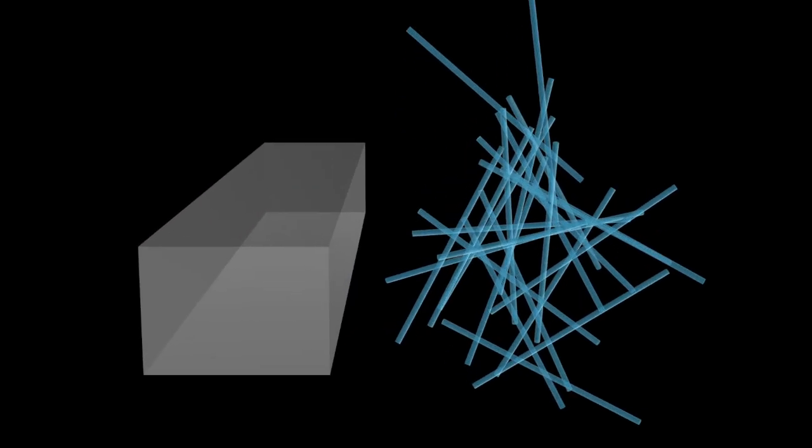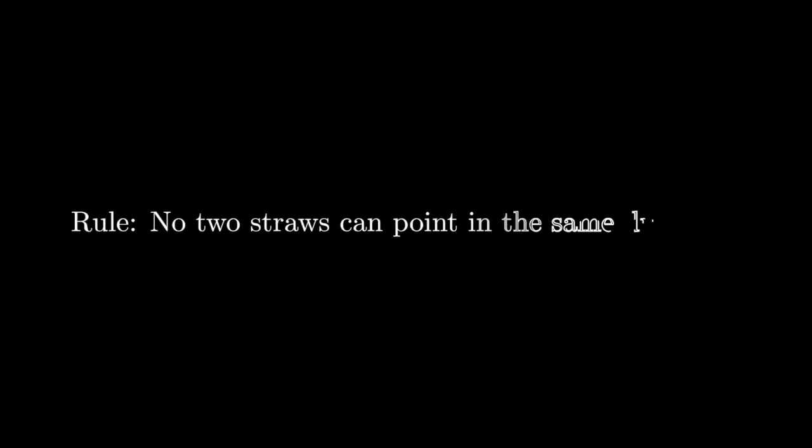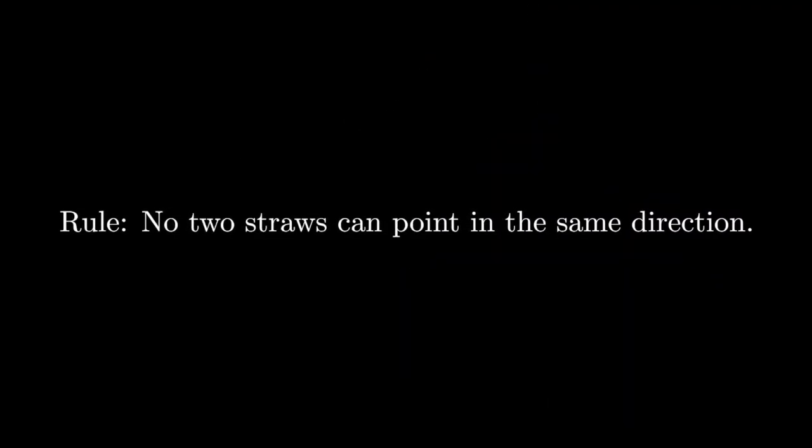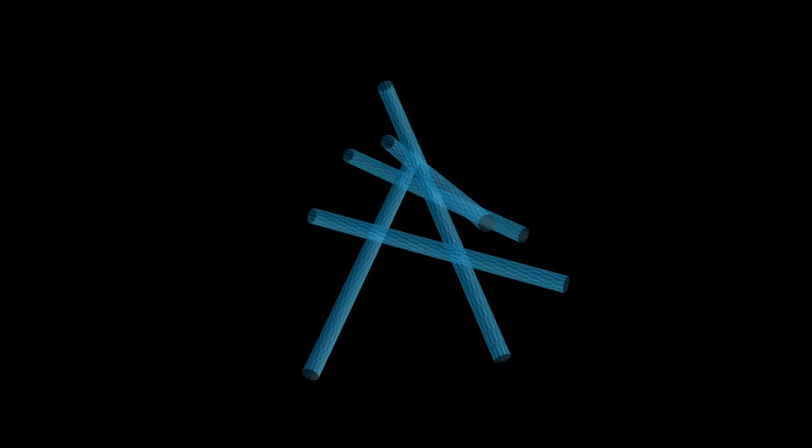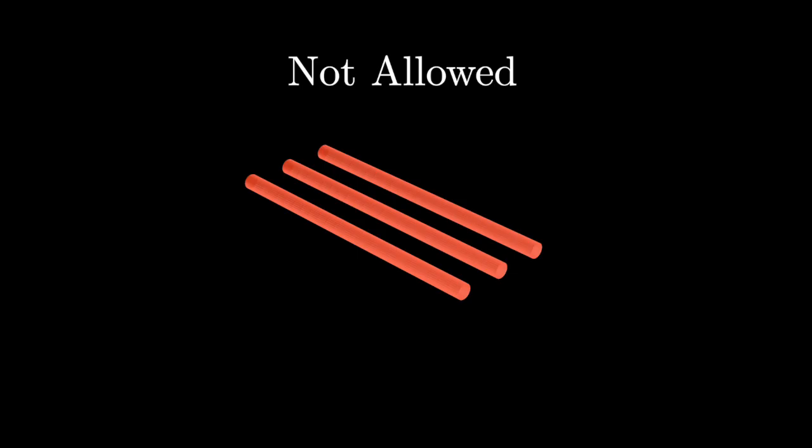Imagine you have a box stacked with straws, and now your challenge is to rearrange them back into the box. But the rule is, no two straws can lie in exactly the same direction. They can touch, cross, or run close together. But not a single pair should overlap 100%, even in parallel. How would you do it?